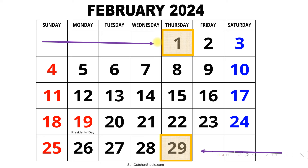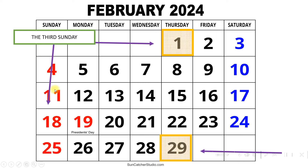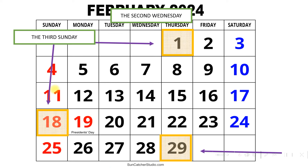Next question: what is the third Sunday? Go to Sunday and read. First Sunday is 4, second Sunday is 11, third Sunday is 18. So the third Sunday is the 18th. Next question: what is the second Wednesday? Go to Wednesday and read. The first Wednesday is actually empty here, but confirm it is still the first. So the second Wednesday is the 14th.